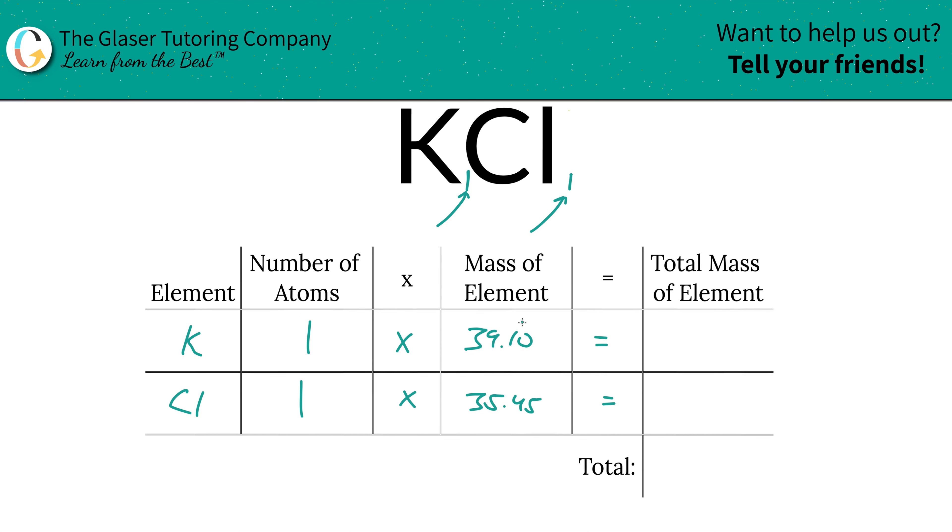And all we're simply going to do is multiply the row across to find the total mass of the element. That's the next step. So here, the total mass of potassium is going to be 39.10. Total mass of chlorine is then going to be 35... Make that a little neater. 35... There we go. 35.45. Okay. Now that my hand is spazzing.